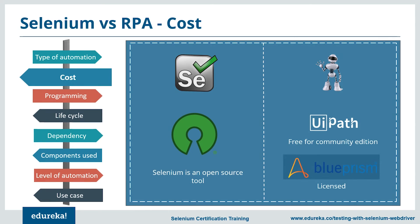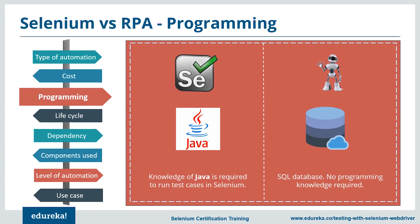Regarding cost: Selenium is open source and free. RPA tools include UiPath, Automation Anywhere, and Blue Prism. UiPath is free for community edition with licensed advanced versions; Automation Anywhere offers a free trial for one month with licensed advanced versions; and Blue Prism is completely licensed. Regarding programming knowledge: Selenium requires knowledge of Java to run test cases, whereas RPA requires no coding knowledge as it deals with back-end processes and database operations.